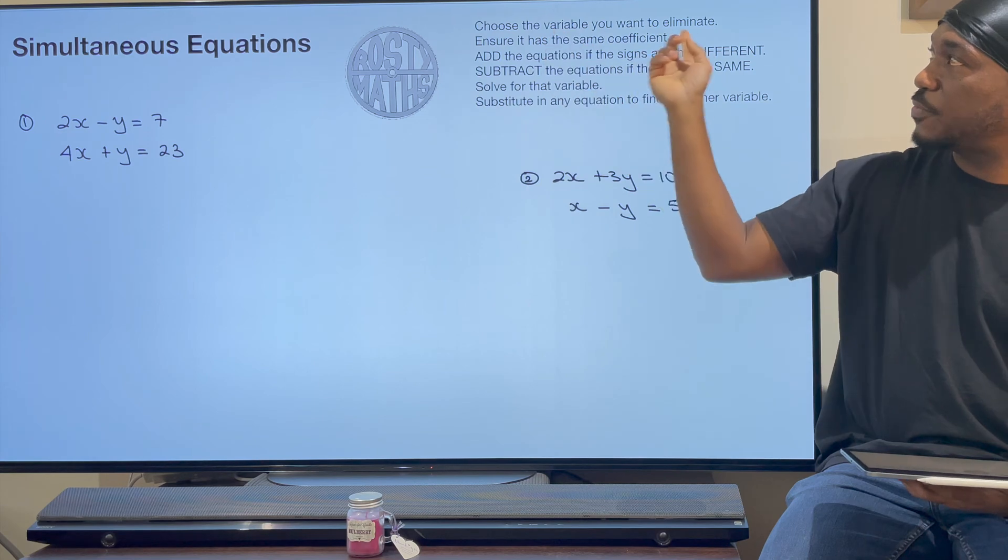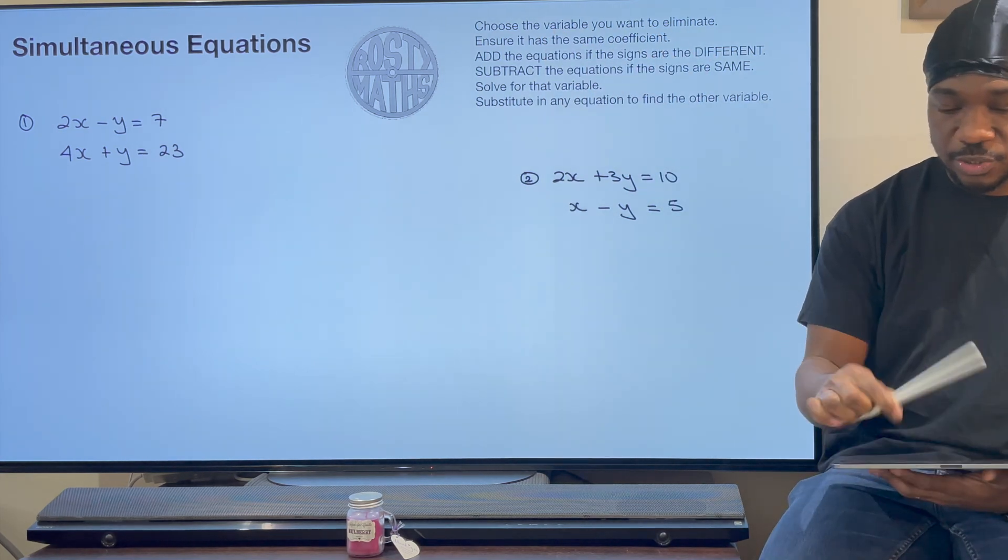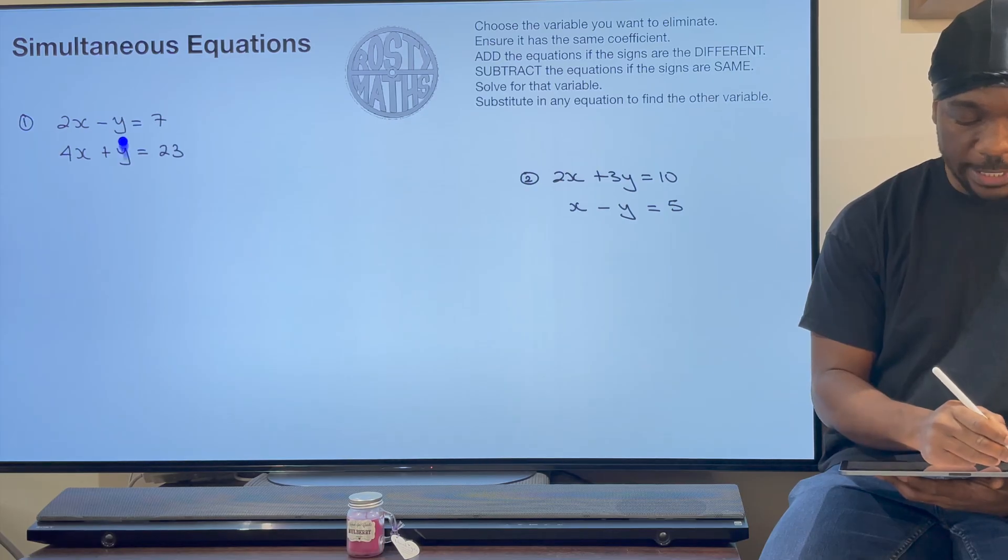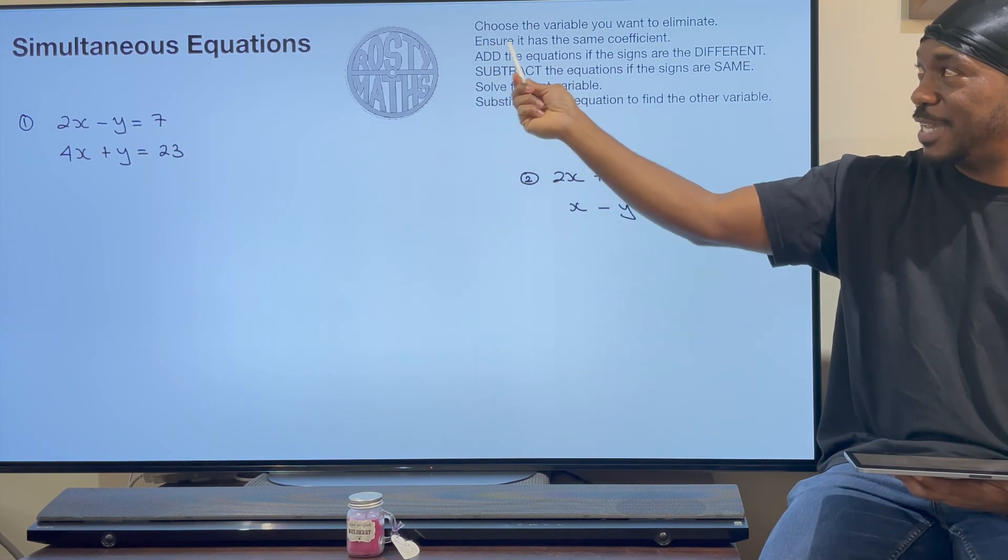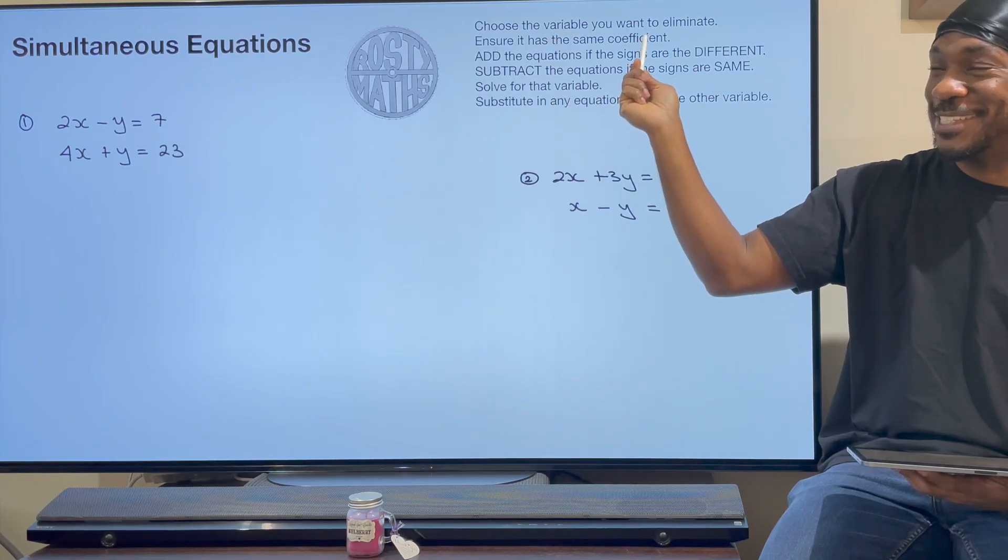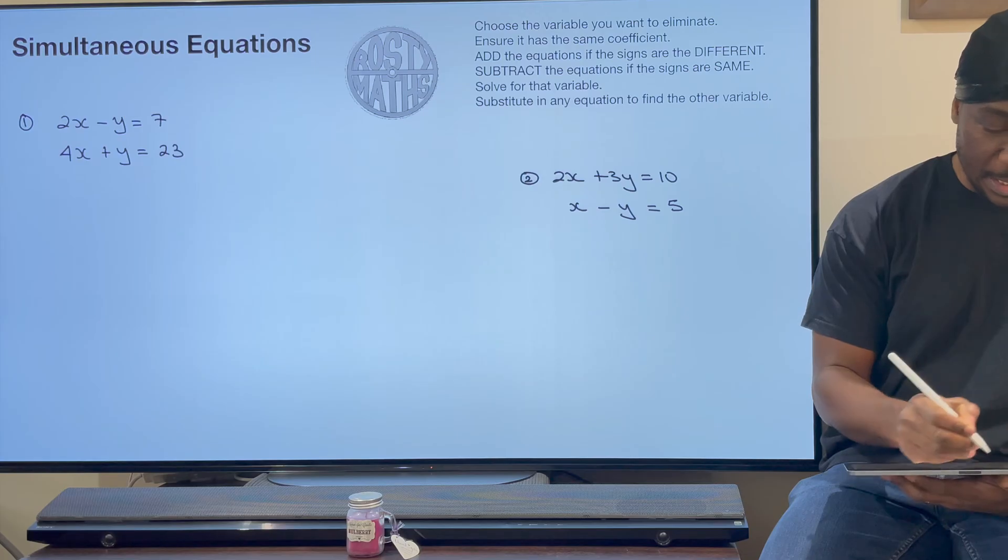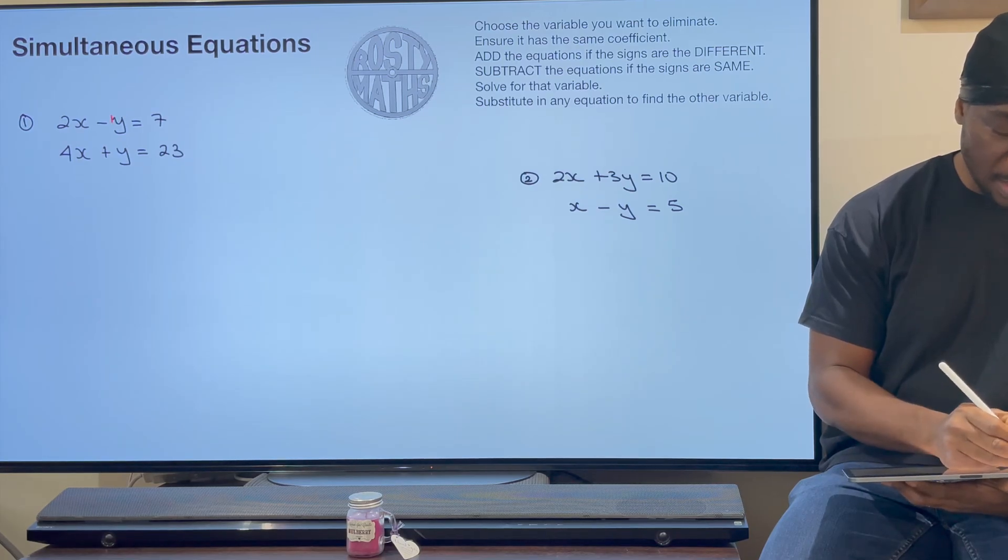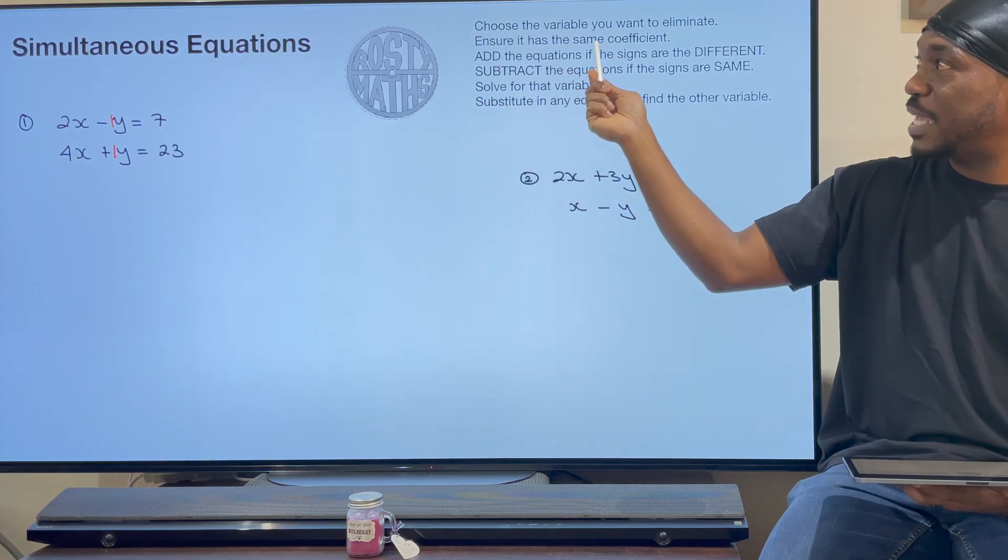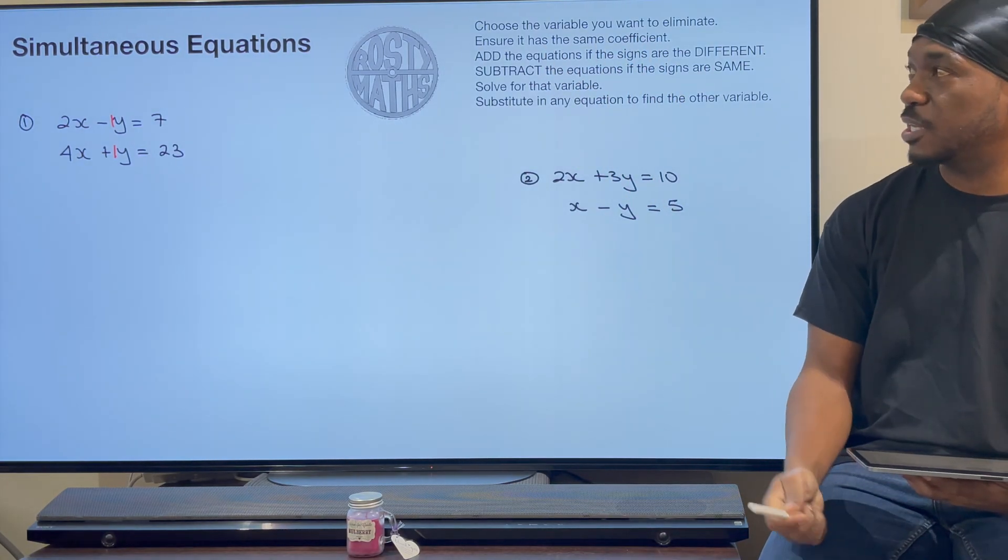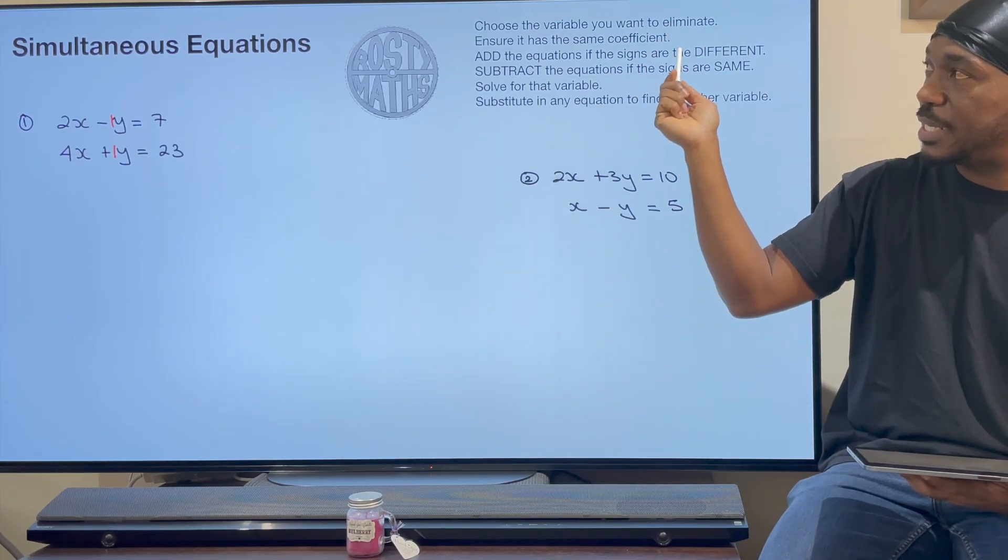This is called simultaneous equations because we've got two equations there that we're solving at the same time. They've got two variables x and y so we need to find out the value of those variables. Let's go through the steps. Choose a variable you want to eliminate. I will choose the variable y. Why? Well, ensure it has the same coefficient and the coefficient of y is one. I can see that there is a one in front of this y and a one in front of that y. They've got the same number or the same coefficient.